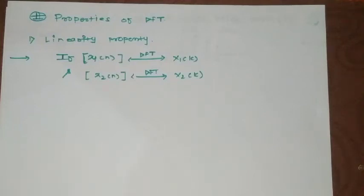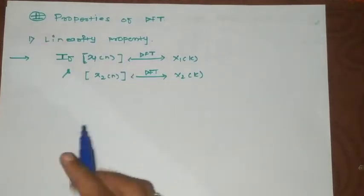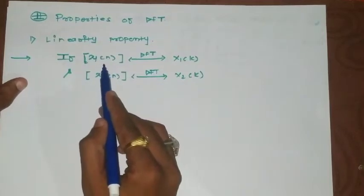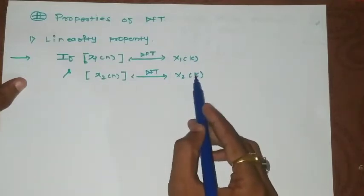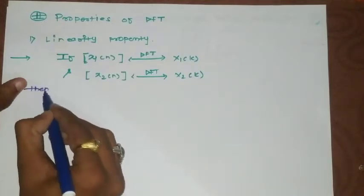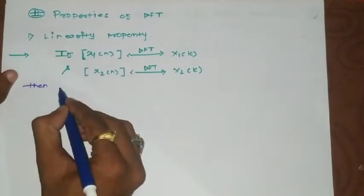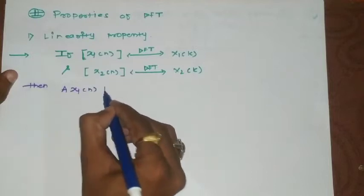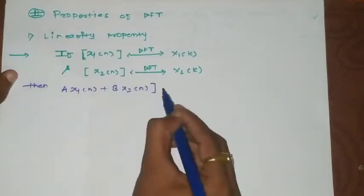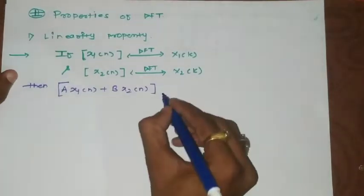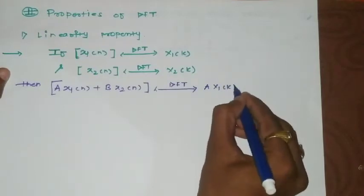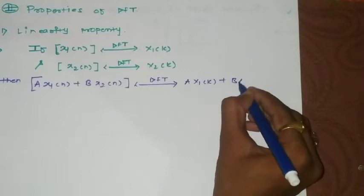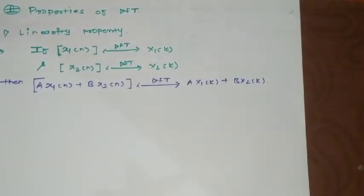Let's start with the first property called the linearity property. We consider two sequences: x1(n) with DFT X1(k), and x2(n) with DFT X2(k). The statement is that the DFT of a linear combination ax1(n) + bx2(n) equals aX1(k) + bX2(k). This is the statement of the linearity property.